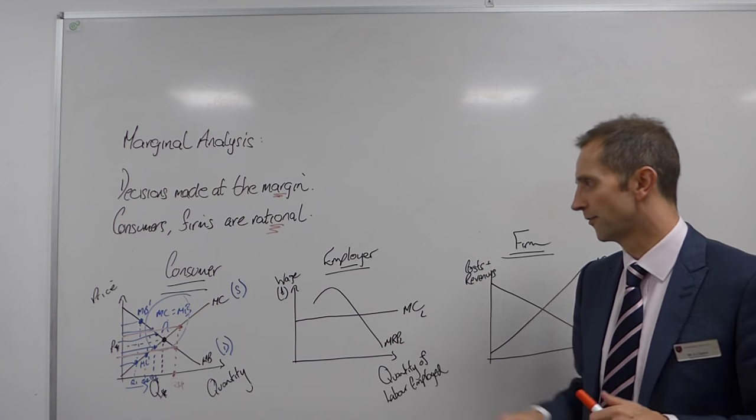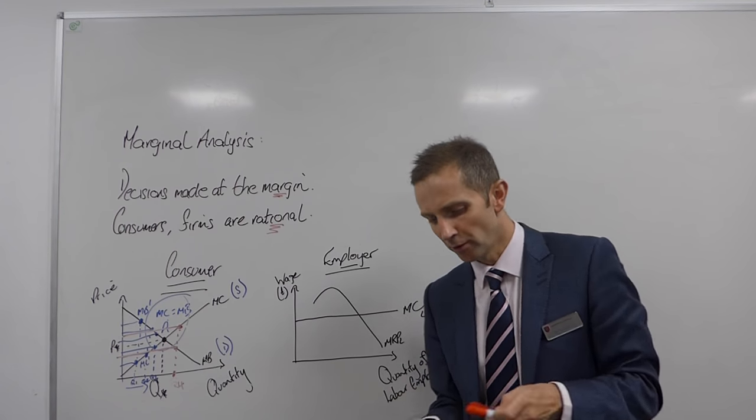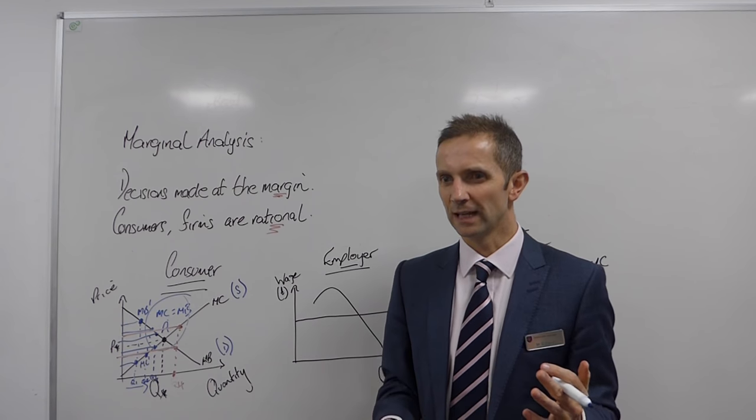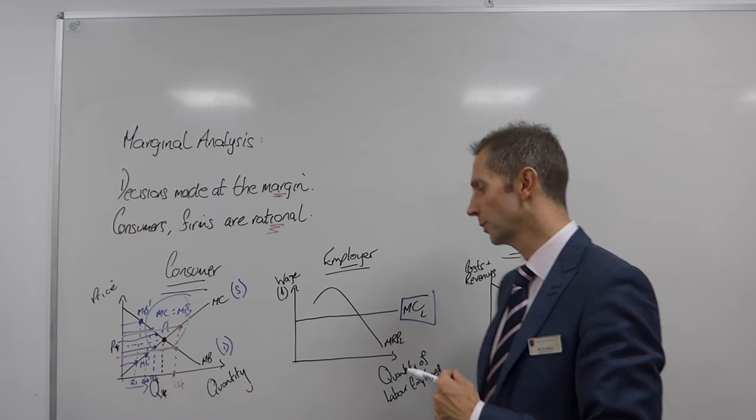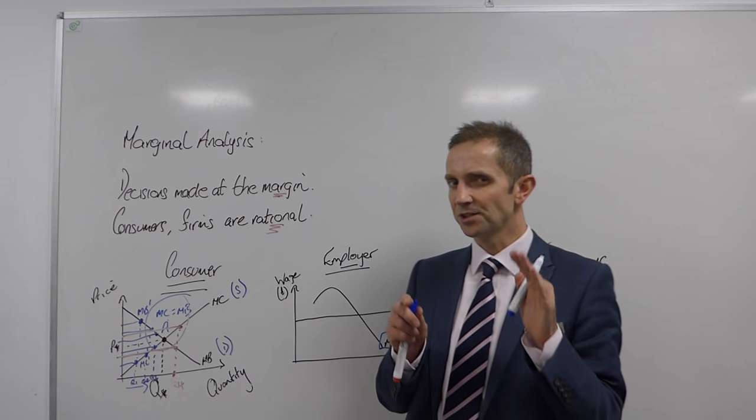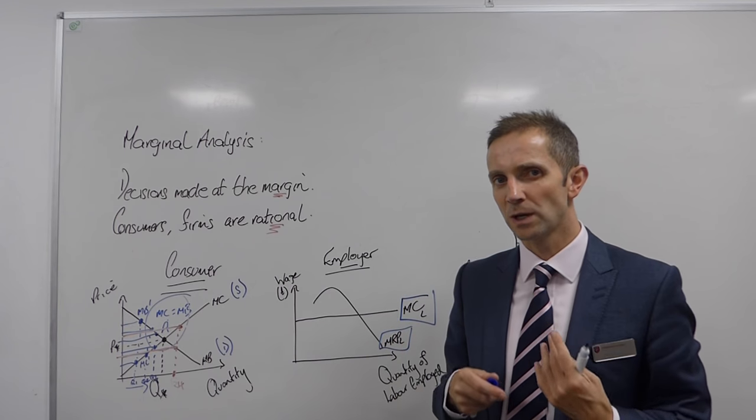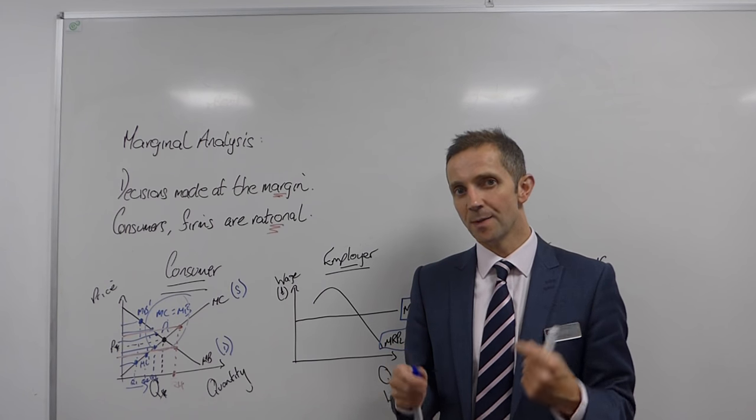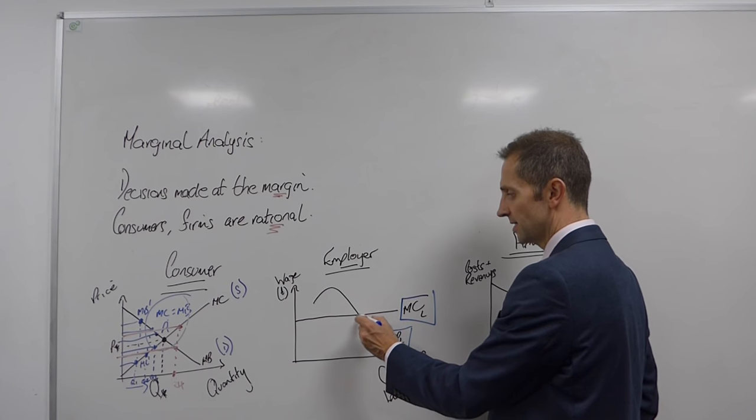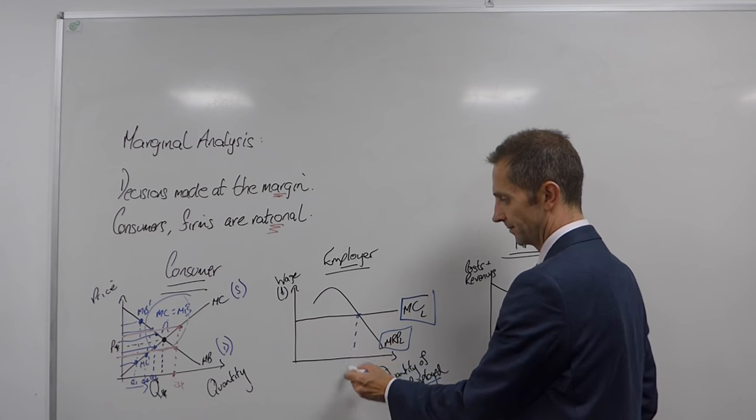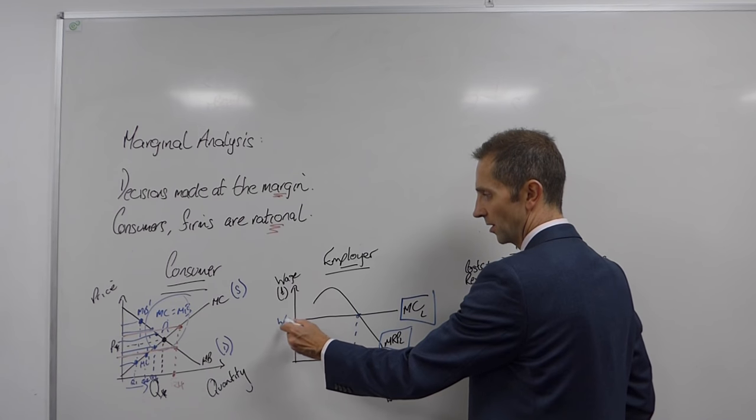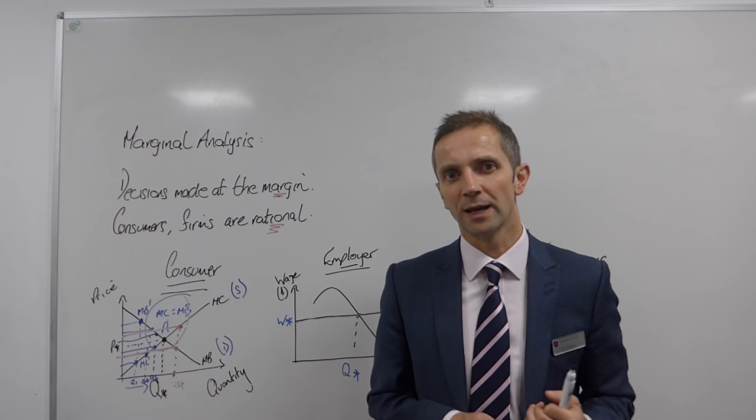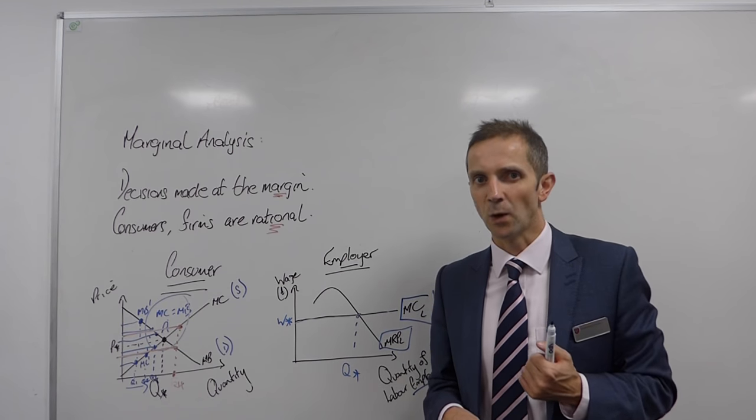Okay, what about the employer, the firm? How many people will they employ? Well again, I've got marginal cost of labour. Well what's the marginal cost of labour? It's the wage you've got to give them. That's the extra cost of employing somebody. I've got MRPL, again, something you'll encounter in year two economics when you look at labour markets. But this is the marginal revenue product of labour, also known as the demand curve for labour. And we're assuming equilibrium is at this level of employment, Q star, at a wage of W star. And the other thing to note here is I'm saying that you pay everybody the same, so it's a perfectly competitive labour market where everybody is willing to work for the same wage.